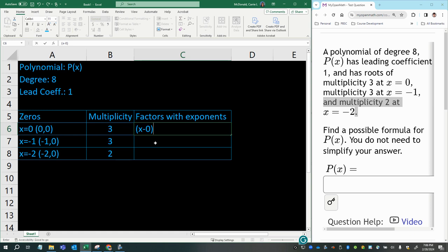Because if you plug zero in here, you'll get zero. So if I raise this to the power of three, that will represent how many times this factor is part of the polynomial. It's always the multiplicity. And this has to do with why the behavior at x-intercepts can vary. It has to do with how many times that factor is part of the polynomial equation.